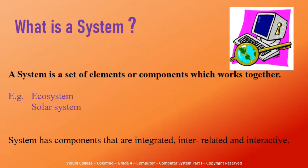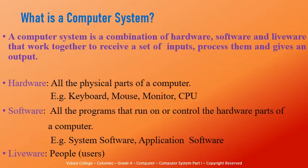The thing to remember is that in a system, the components are integrated, interrelated and interactive. Now that you know the meaning of the word system, let's see what is a computer system. A computer system is a combination of hardware, software and liveware that work together to receive a set of inputs, process them and give an output.